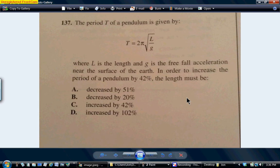In order to increase the period of a pendulum by 42 percent, the length must A be decreased by 51 percent, B decreased by 20 percent, C increased by 42 percent, or D increased by 102 percent. Now I'm going to go ahead and tell you the answer now and then we'll understand the rationale behind it. So the answer is D. We have to increase it by 102 percent.